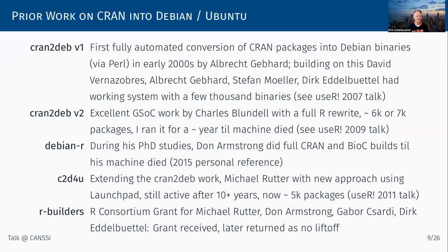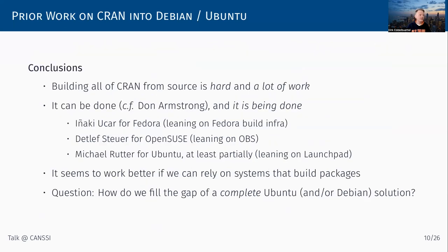A few of us wrote a proposal for the R Consortium — I was VP for that — we got funded, but for various reasons we didn't get the work done. There's also an effort for Fedora by Steuer in Hamburg, and another for openSUSE leaning on an existing build service. Concluding from this history: yes, you can build binaries from CRAN, but it's a lot of hard work. It can be done — Don did it and a few people do it currently — but it requires help.